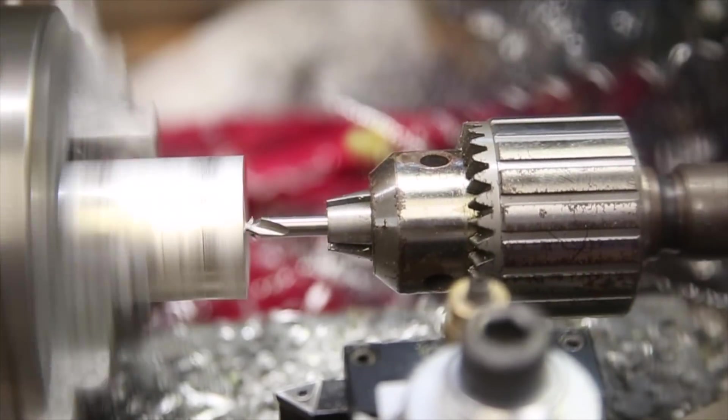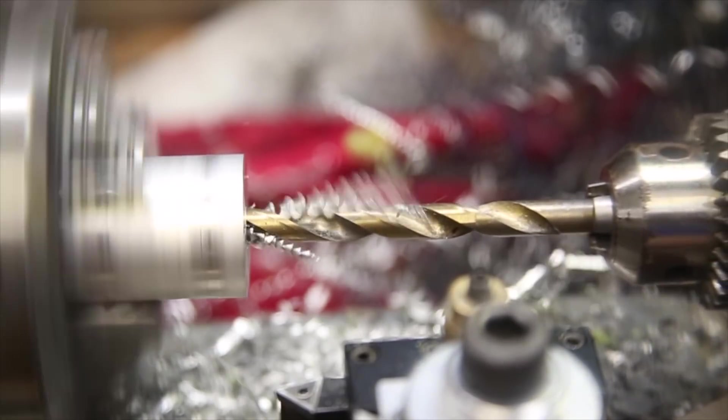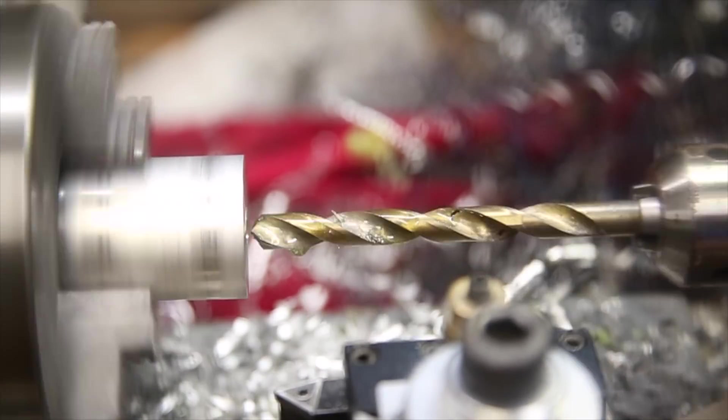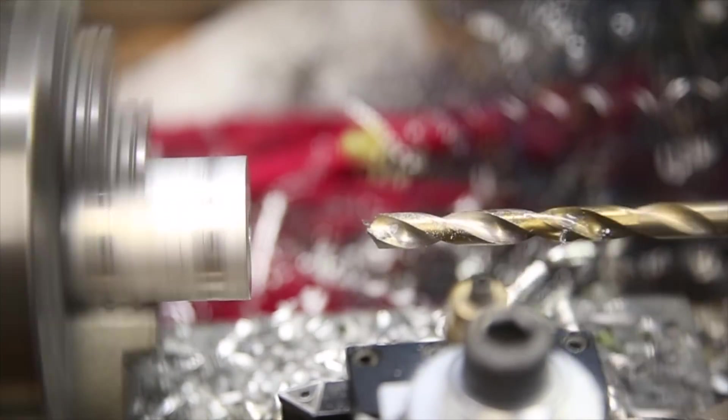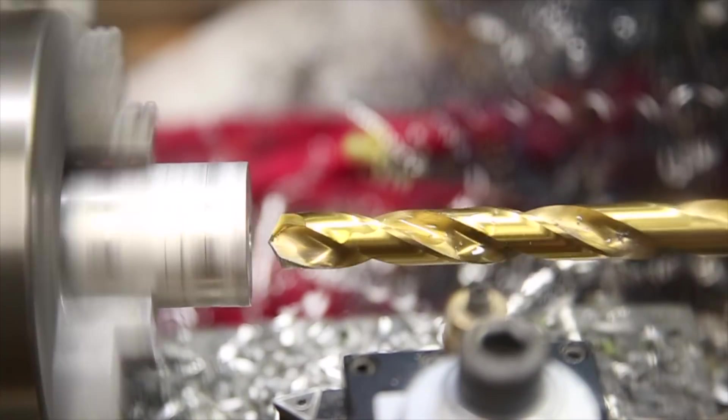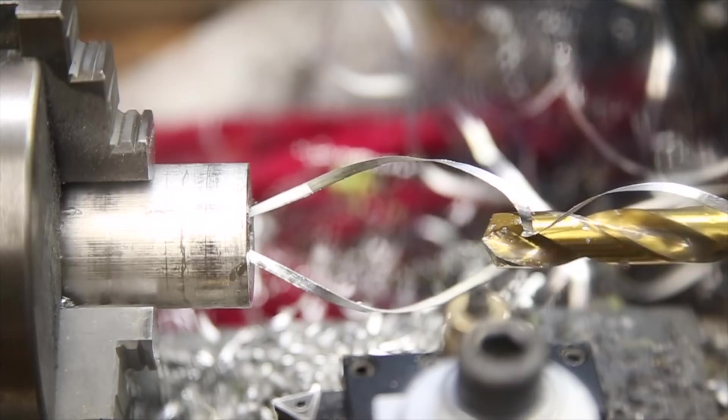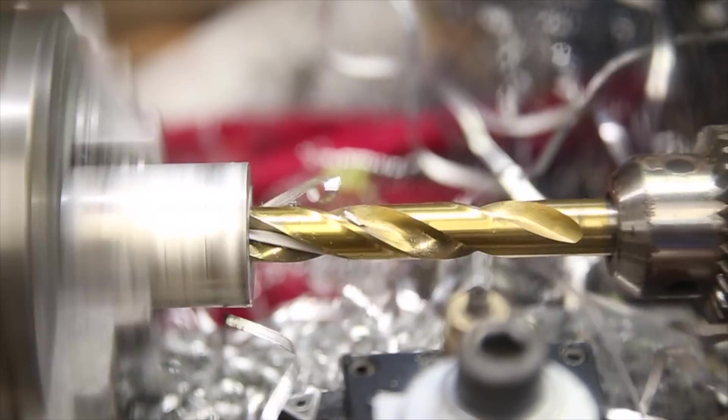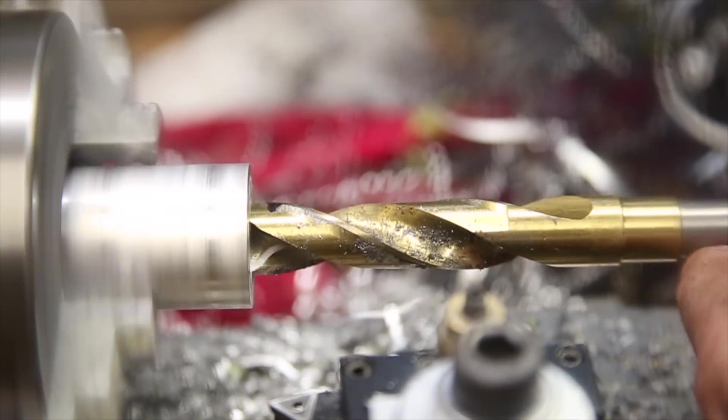And now I'm going to be center drilling a 12.5mm through hole in the part. This size will accept the male mounting part of the microphone now. I'm also opening up one side to create a press-fit space for the bearing.